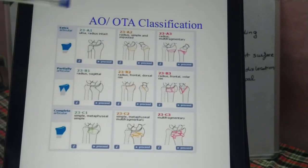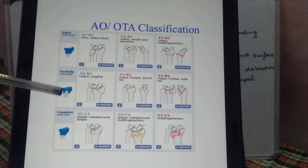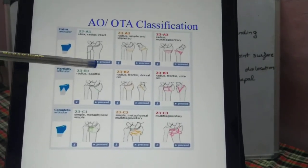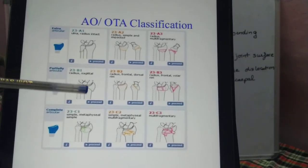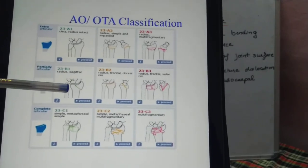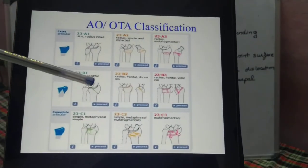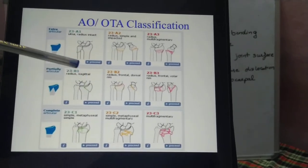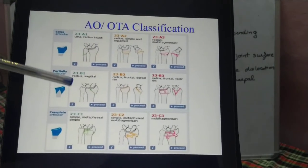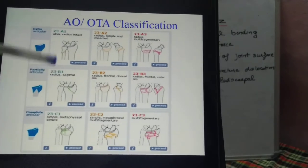Type B is partial articular. B1 is a sagittal plane fracture of the radius, most likely a radial styloid fracture.